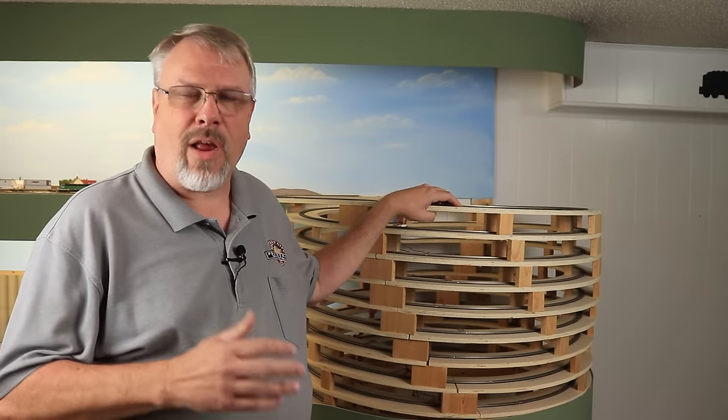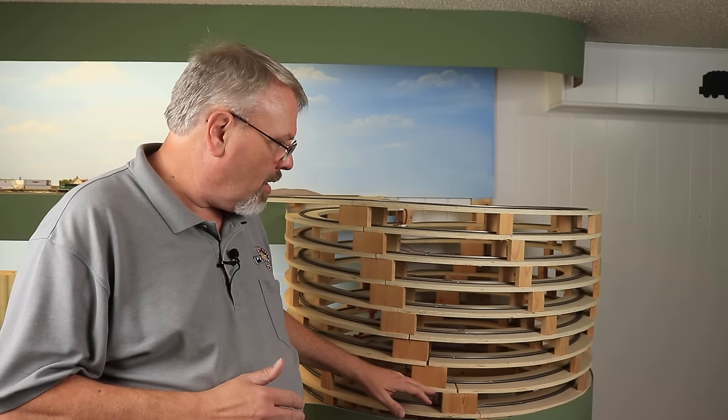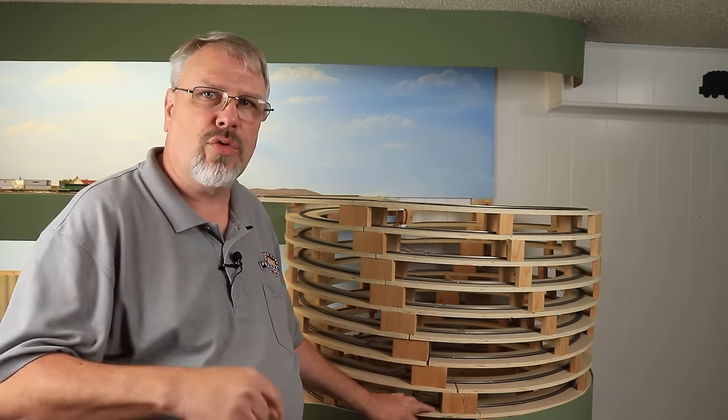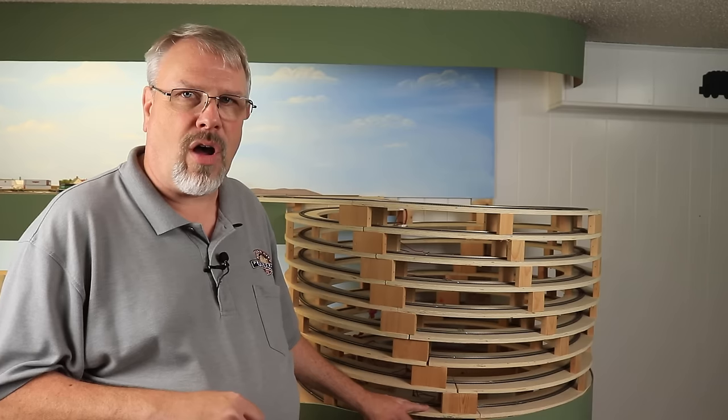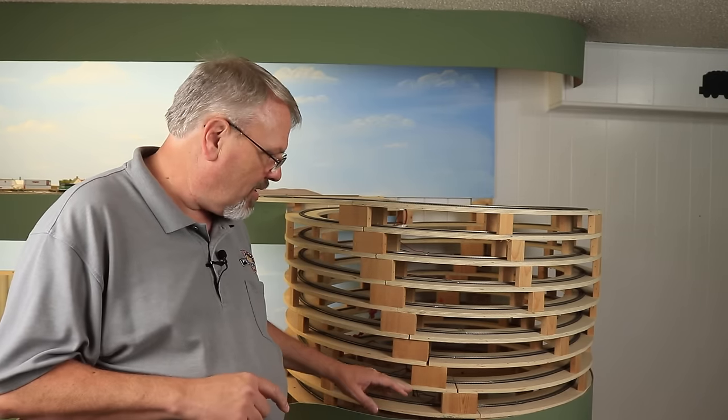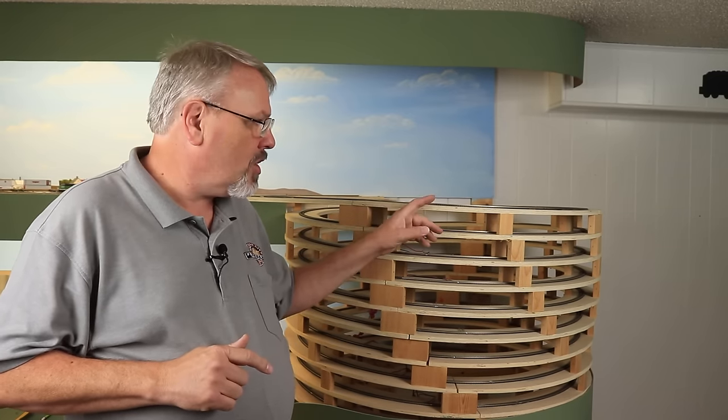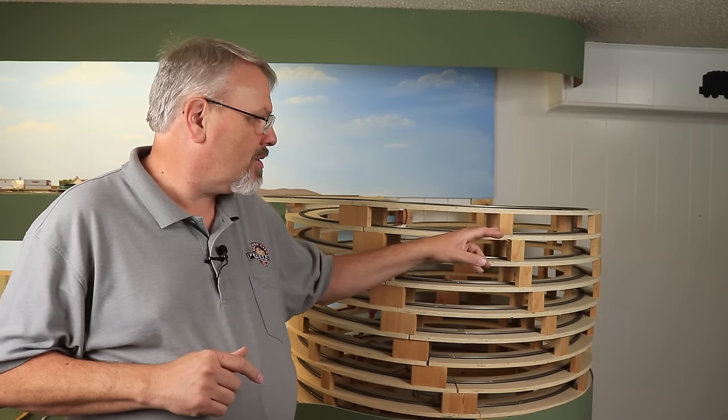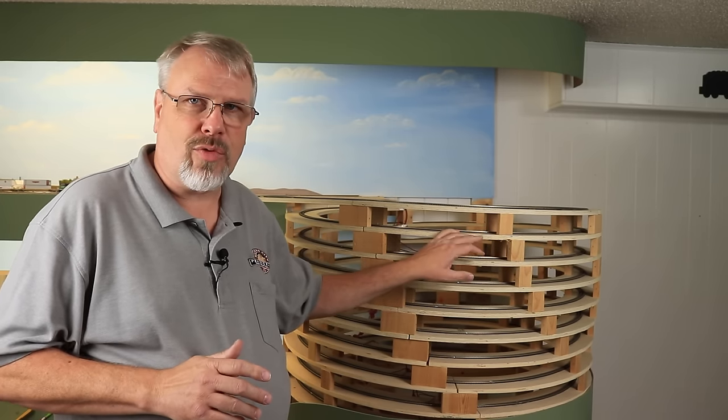When I built this Helix, I really did not build it with the idea of moving it intact. So as we take this Helix down, I'm literally going to have to tear it apart. Much of it could come apart in a unit, but the bottom layer of the Helix itself is screwed directly into the risers, and there's no way to get to those screws without taking the layer above that off. So we're going to have to take this thing down at least several sections at a time. Whenever I constructed this, I used a combination of wood glue and three-inch brads with a pneumatic nailer to hold it together. The brads really were to hold it together while the glue dried. The glue was what really makes this solid.